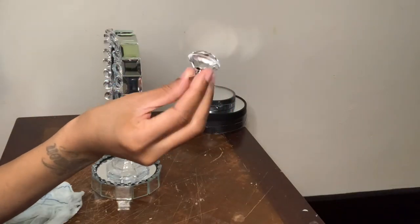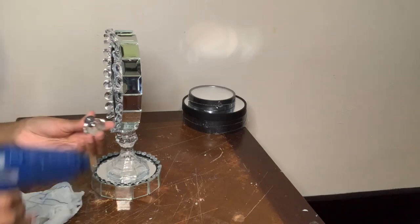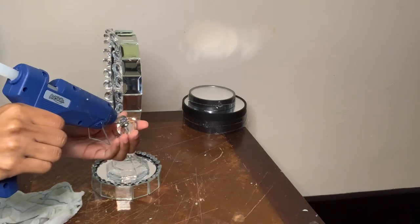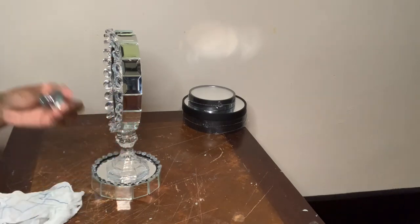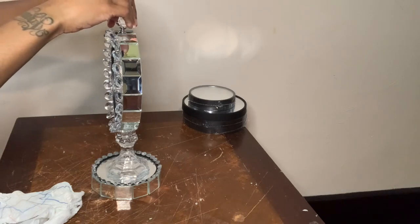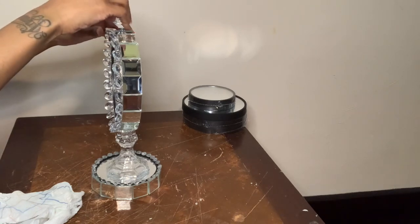I'm going to glue this crystal clear drawer knob to that open space, then remove any excess glue strings, clean my mirror towels off, and then I will be right back to show you guys the finished look.